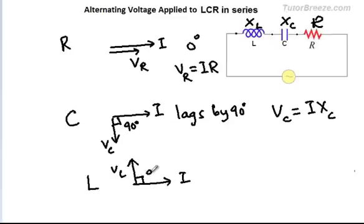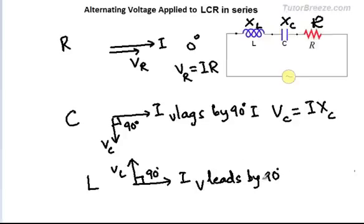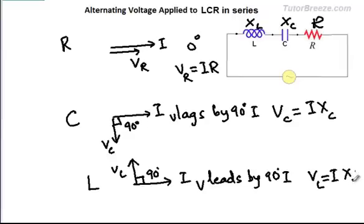For an inductor, the current lags the voltage by 90 degrees, or equivalently, the voltage leads the current by 90 degrees. It is important to specify which quantity leads or lags the other. The voltage amplitude across the inductor is given by VL equals I times XL, where XL is the inductive reactance.